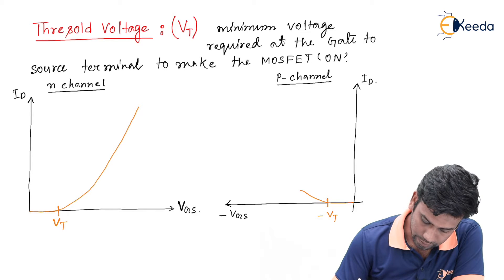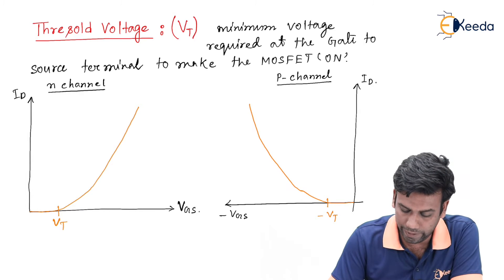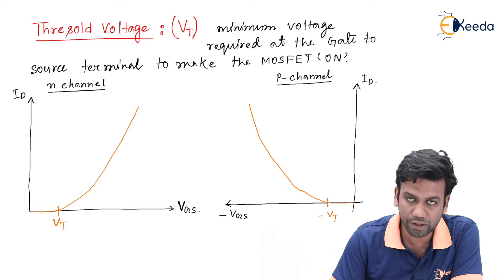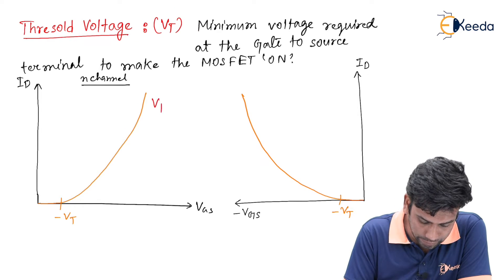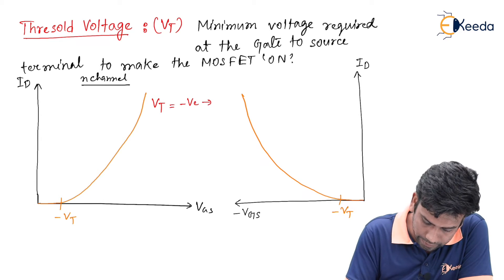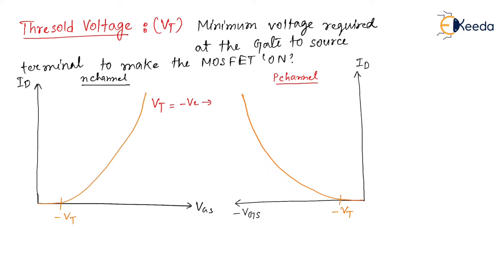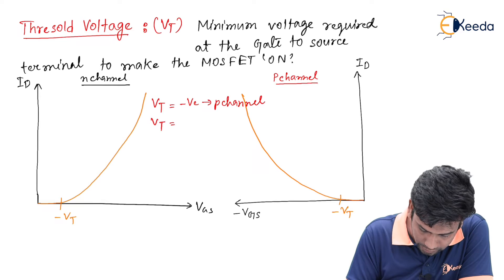From this diagram we can find that for a P-channel MOSFET we require a negative threshold value, and for an N-channel MOSFET we require a positive threshold value. Hence, we can write that the threshold voltage VT is equal to a negative voltage for the P-channel, and VT is positive for the N-channel.